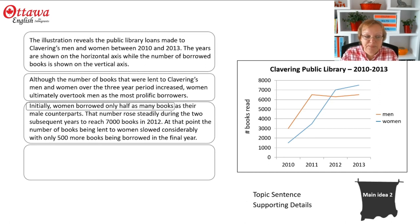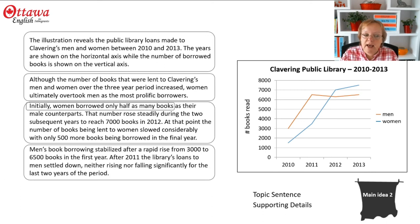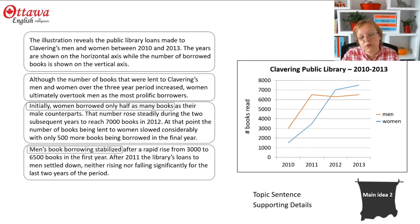Now we go to the men — same deal, we've got the orange line. We're going to say: 'Men's book borrowing stabilized after a rapid rise from 3,000 to 6,500 books in the first year. After 2011, the library's loans to men settled down, neither rising nor falling significantly for the last two years of the period.' Again, we've got a topic sentence that tells our audience what the idea is that we're going to develop with our details.